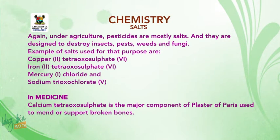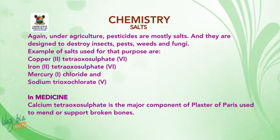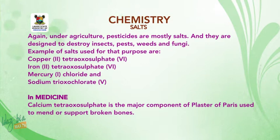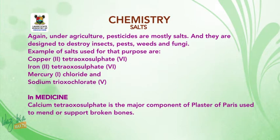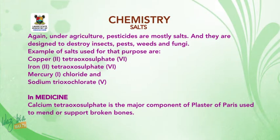Again, under agriculture, pesticides are mostly salts, and they are designed to destroy insects, pests, weeds, and fungi. Examples of salts used for that purpose are copper 2 tetraoxyl sulfate 6, iron 2 tetraoxyl sulfate 6, mercury 1 chloride, and sodium trioxyl chloride 5.